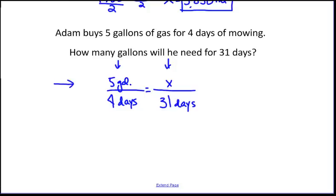The numerators both deal with gallons, and the denominators both deal with days. So that means that we have set up this proportion in an acceptable manner. Let's multiply out.